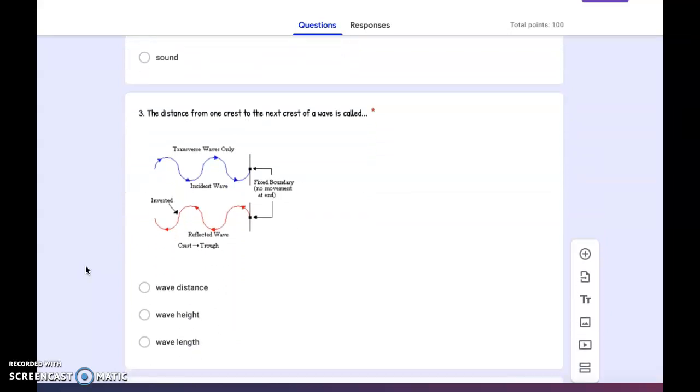Number three: The distance from one crest to the next crest of a wave is called... wave distance, wave height, or wave length?